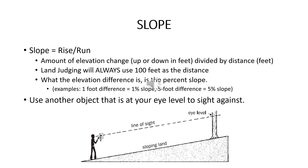Slope is simply a calculation of rise over run — how many feet up and down a hill divided by how many feet away from you. In Kentucky land judging, the distance will always be 100 feet. This is very important as it will make the slope percent a very easy calculation. It will always be how many feet up and down the hill divided by 100, which is simply just moving the decimal place and making a percent out of it.